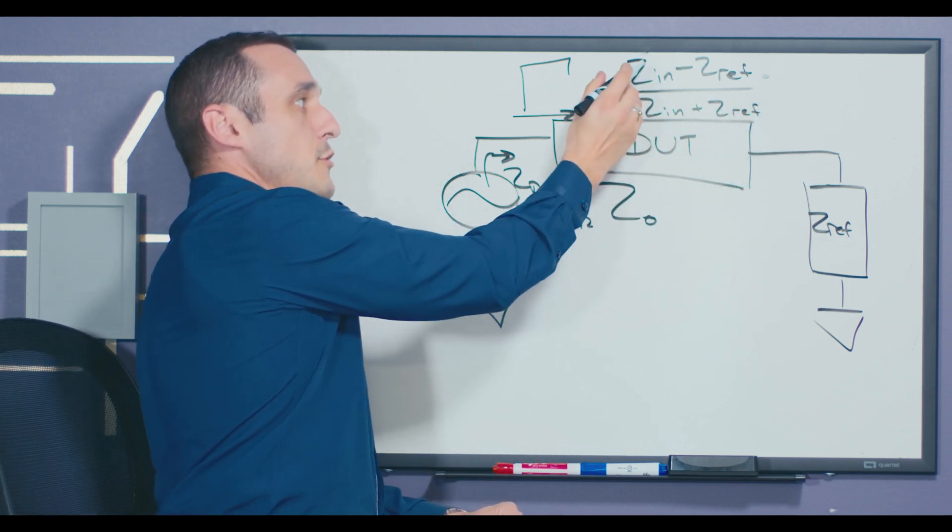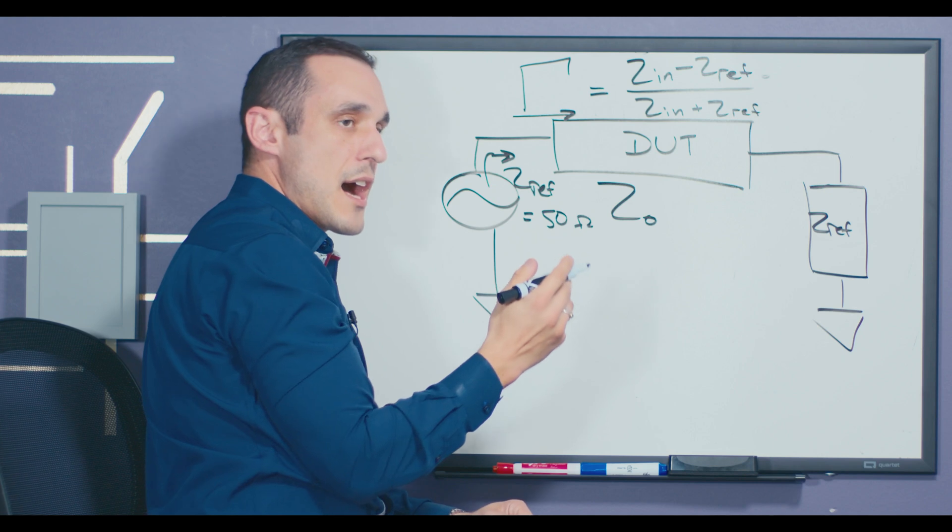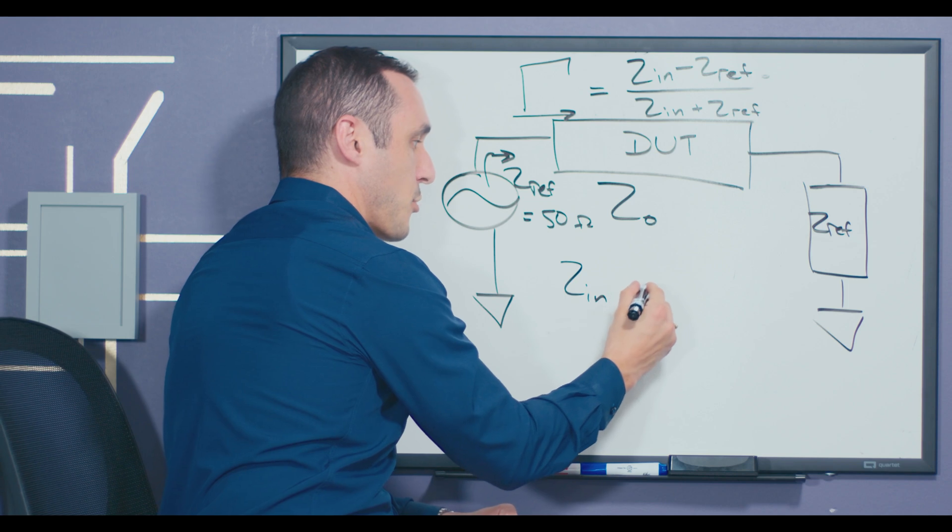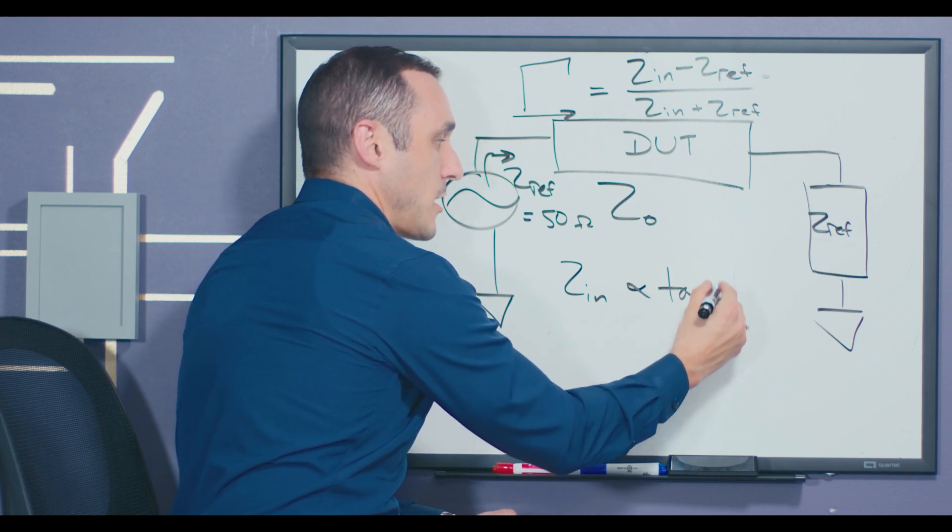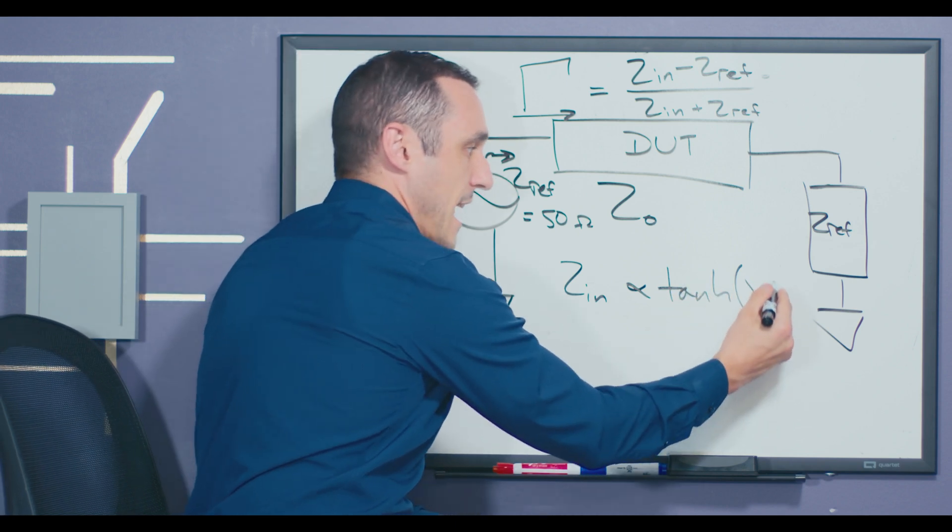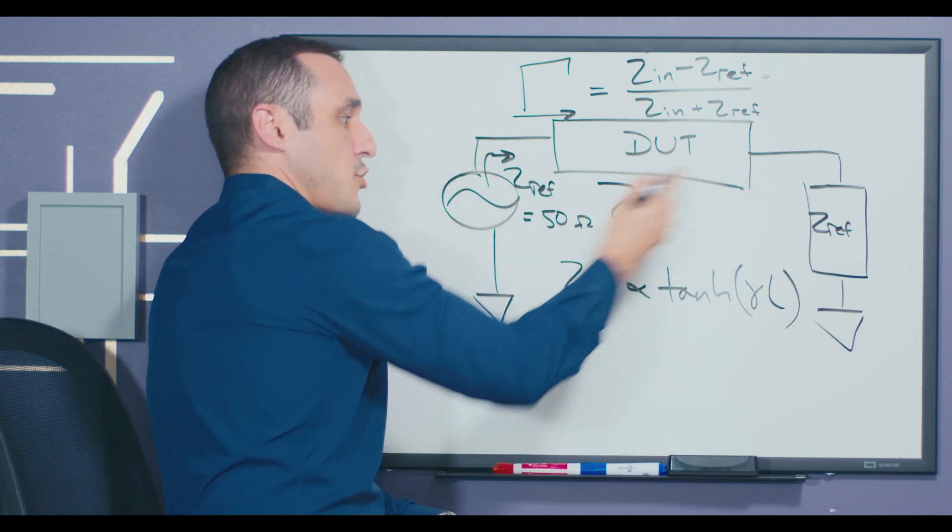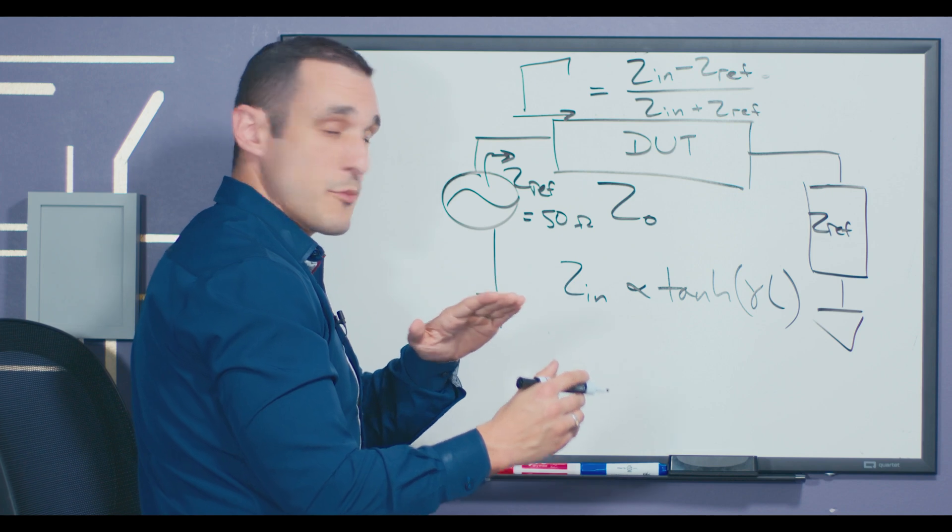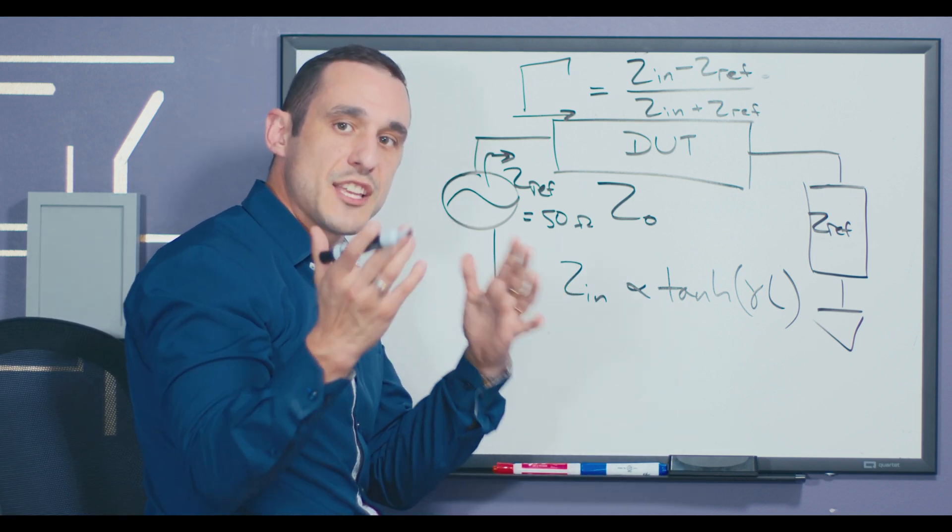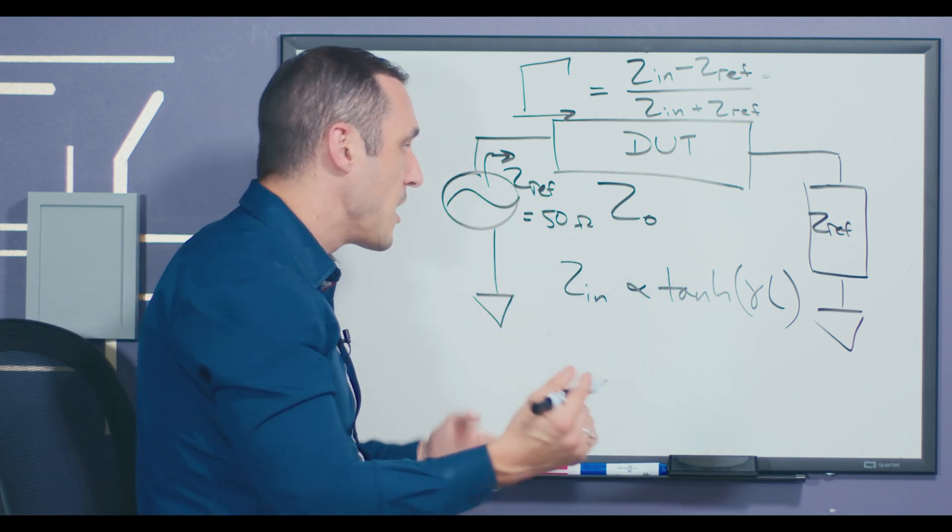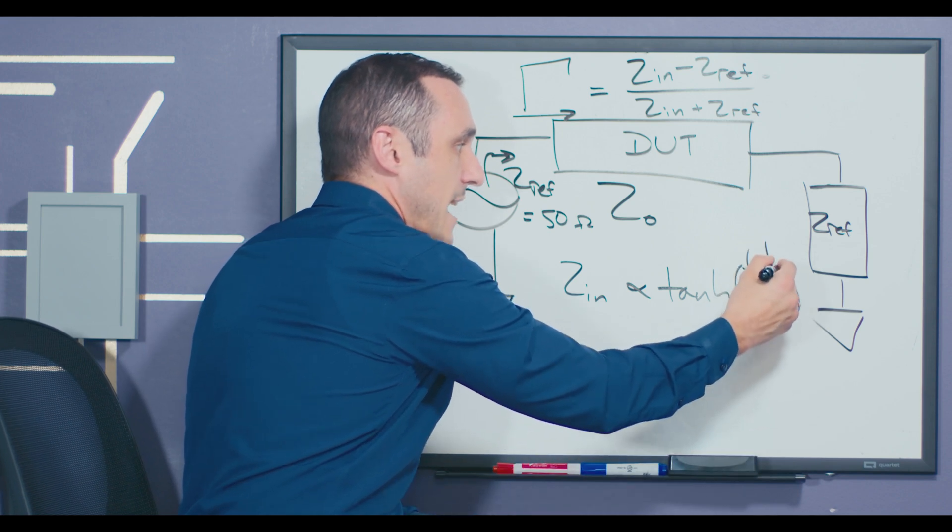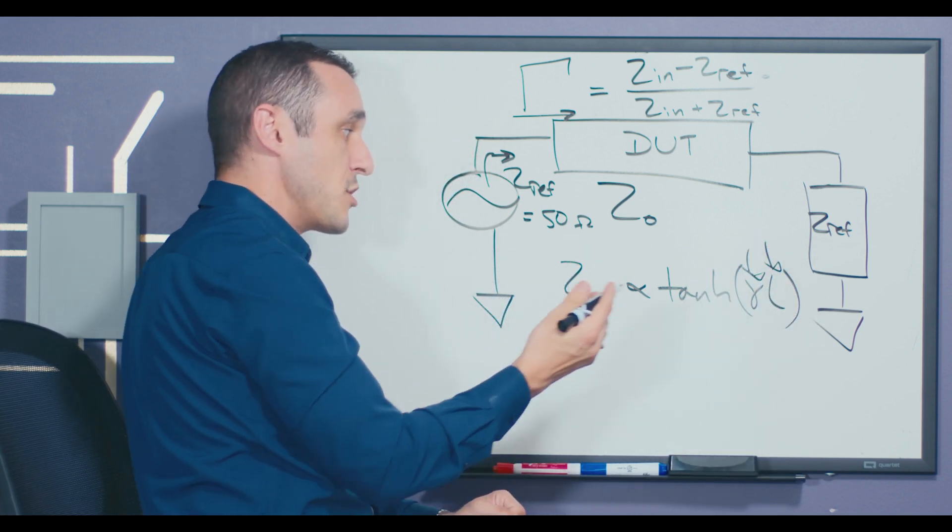So this value for Z in is what really defines the value of S11. And remember that Z in is proportional to a hyperbolic tangent function involving the propagation constant and the length of this transmission line. So this is really important because this hyperbolic tangent function is what's going to give the S11 curve its very characteristic shape. So it depends on this propagation constant and the length of the transmission line.